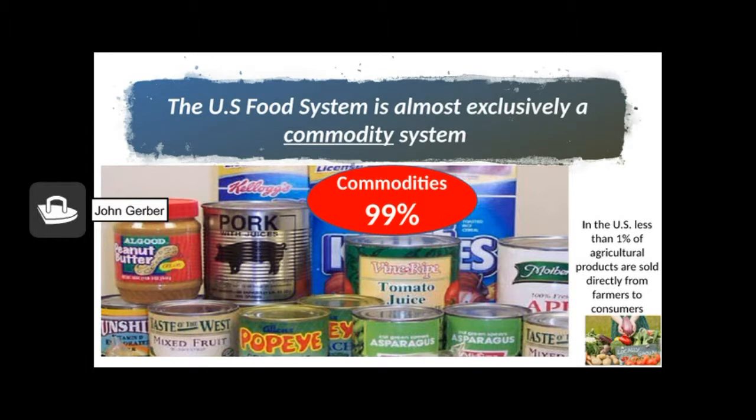The commodity system is important because most of the food, most of the agricultural products in this country go through the commodity system. We think local food is a big deal and it is in some parts of the country but small relative to the power of the commodity system.